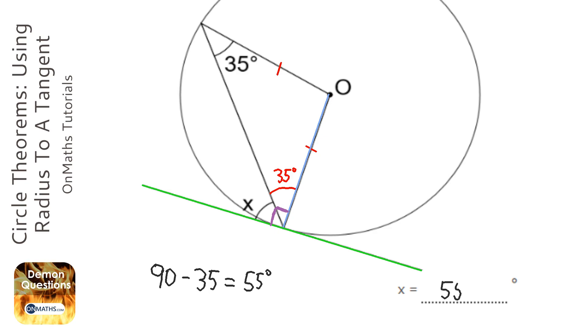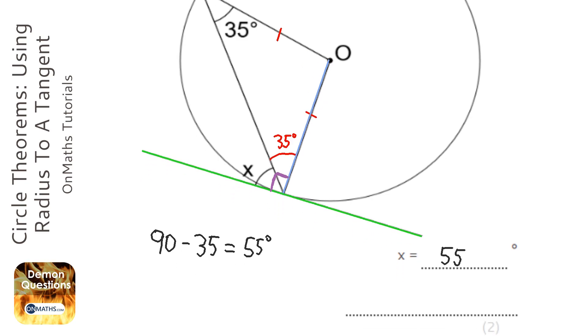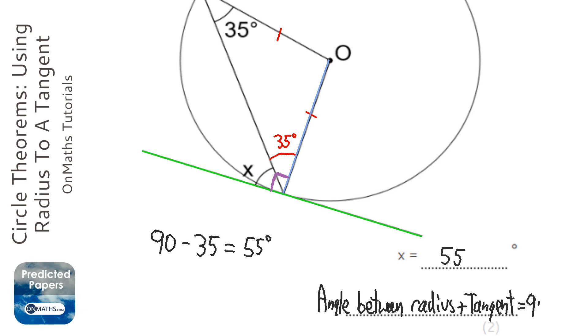So not only do we need to write down what x is, we also need to give the reason. So reason will need to include the fact it's an isosceles triangle, so you need to write that down. And the circle theorem that we're using is angle between radius and tangent equals 90 degrees. So anything saying that when the radius and tangent meet it's 90 degrees or right angle will give you the mark. So let's wrap it up.